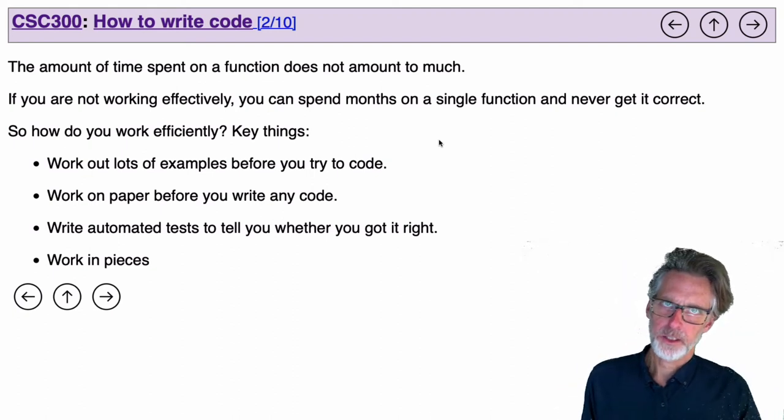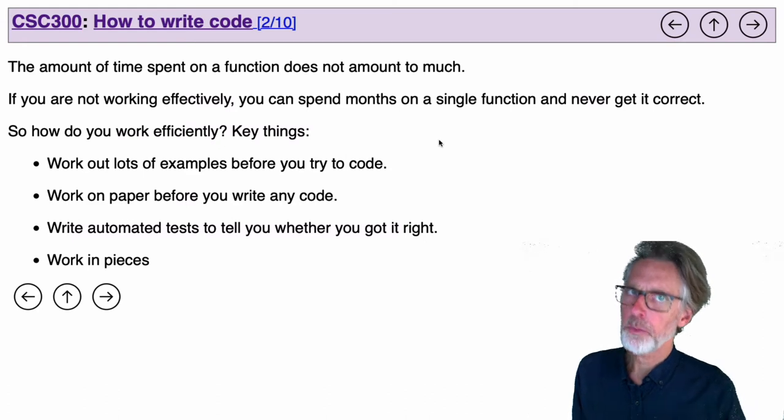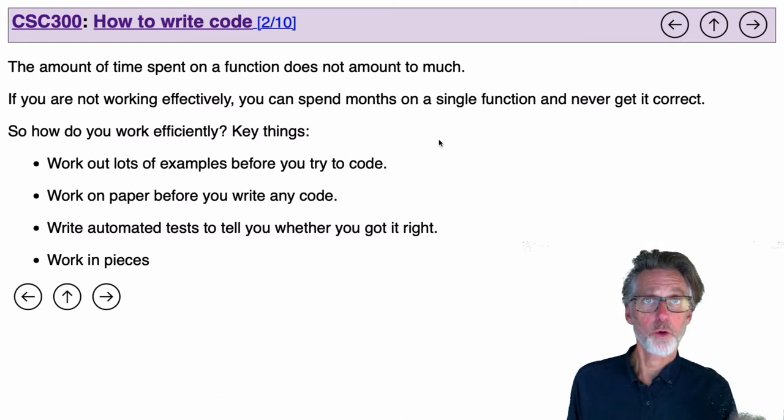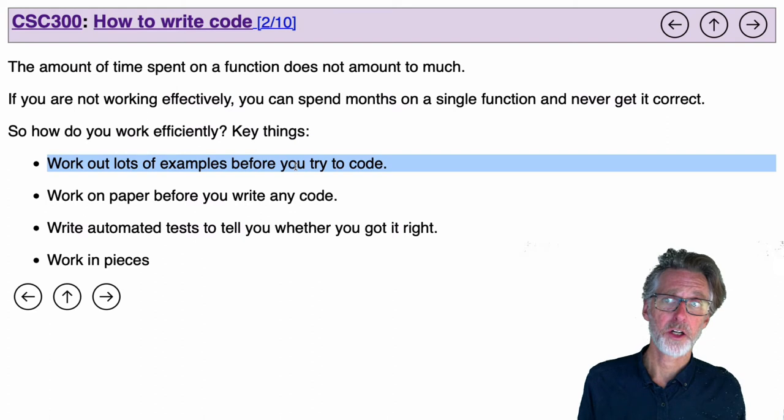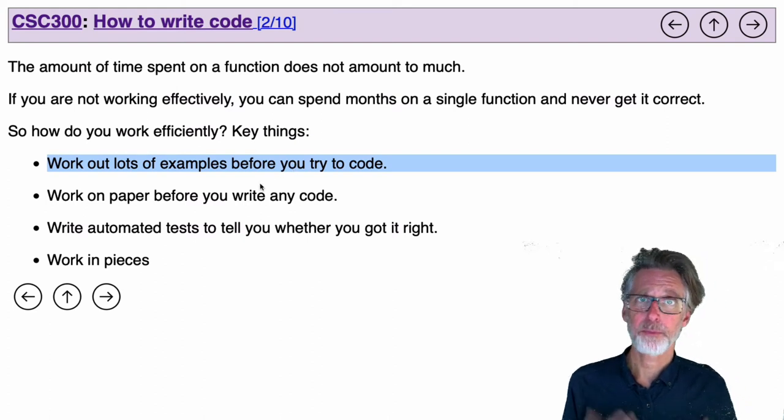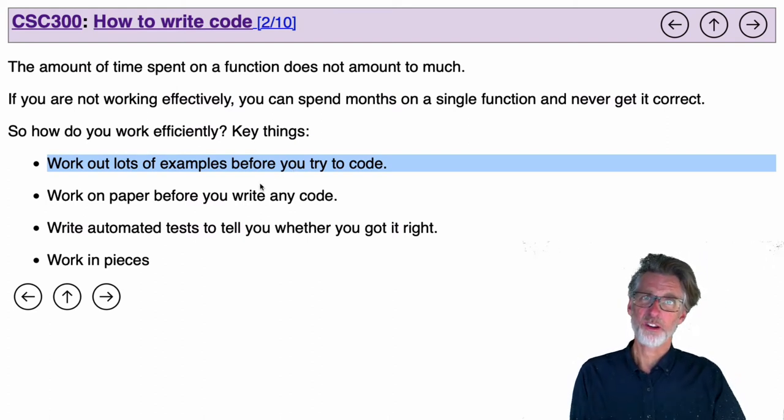The main thing that you need to do when approaching a new problem is to ensure that you understand that problem. Work through a bunch of examples on paper before you try to code anything at all. The biggest mistake that beginning programmers make is to start coding too early.